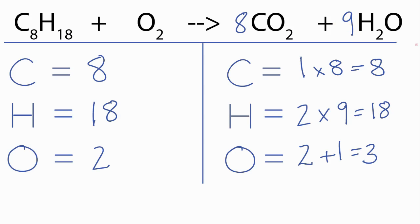So everything is balanced except the oxygens. Let's recalculate the number of oxygens we have on the product side. So, I have 8 times 2, there's 16 there, plus 9 times 1, that's 9, for a total of 25 oxygen atoms.